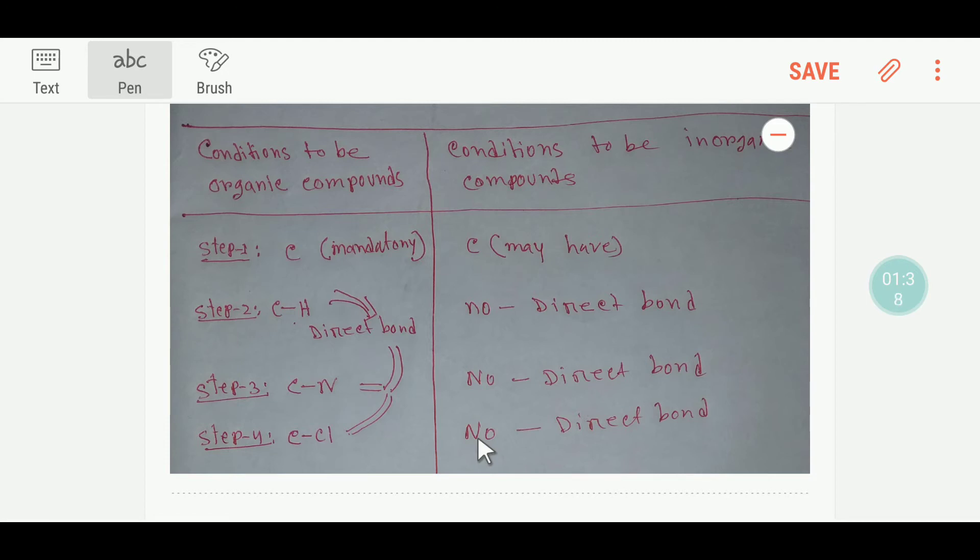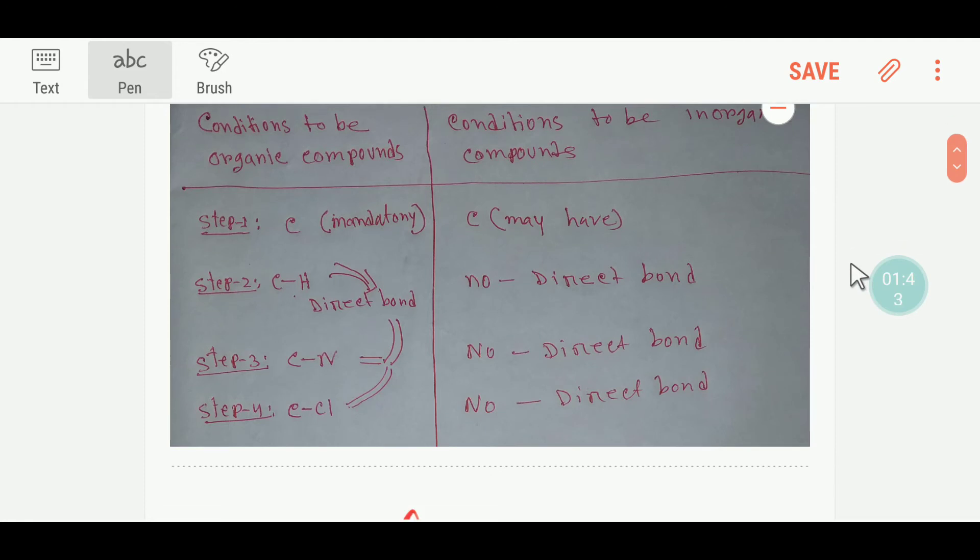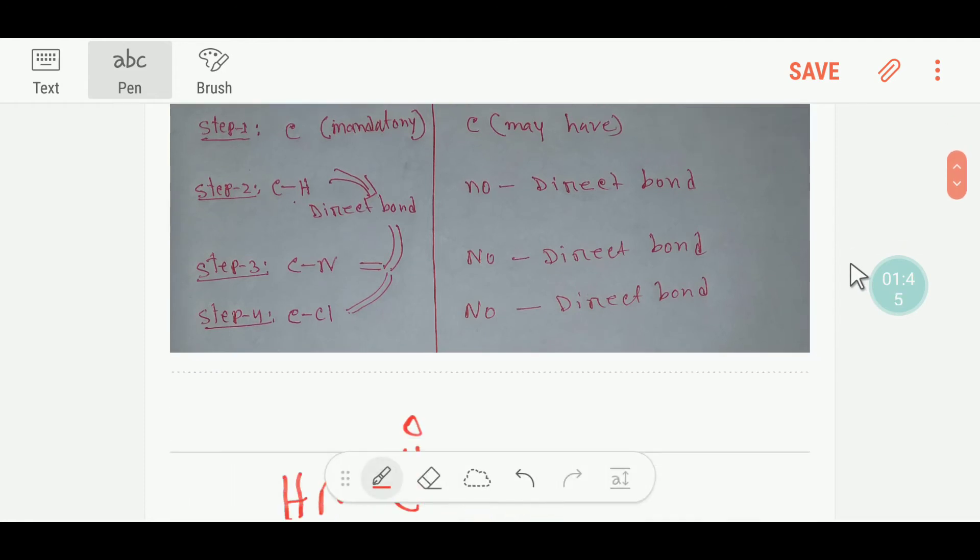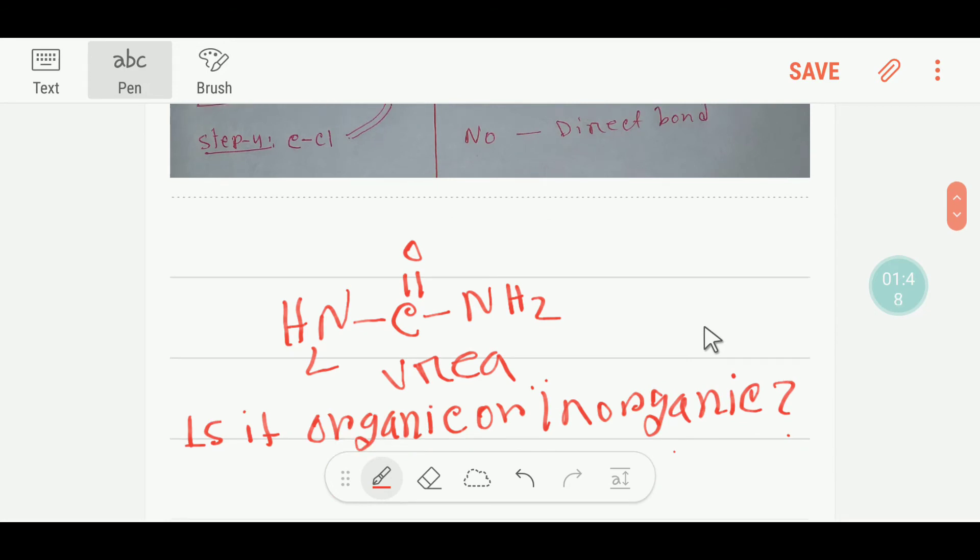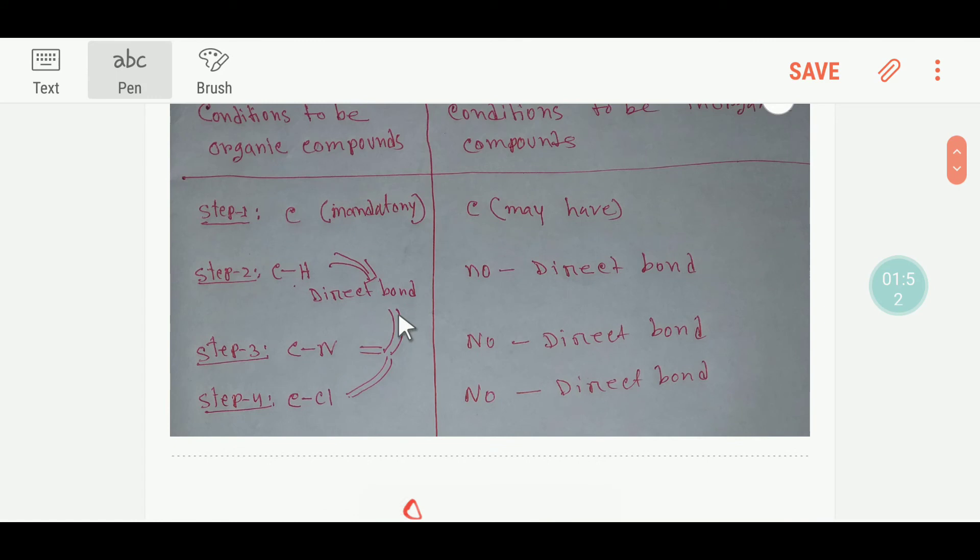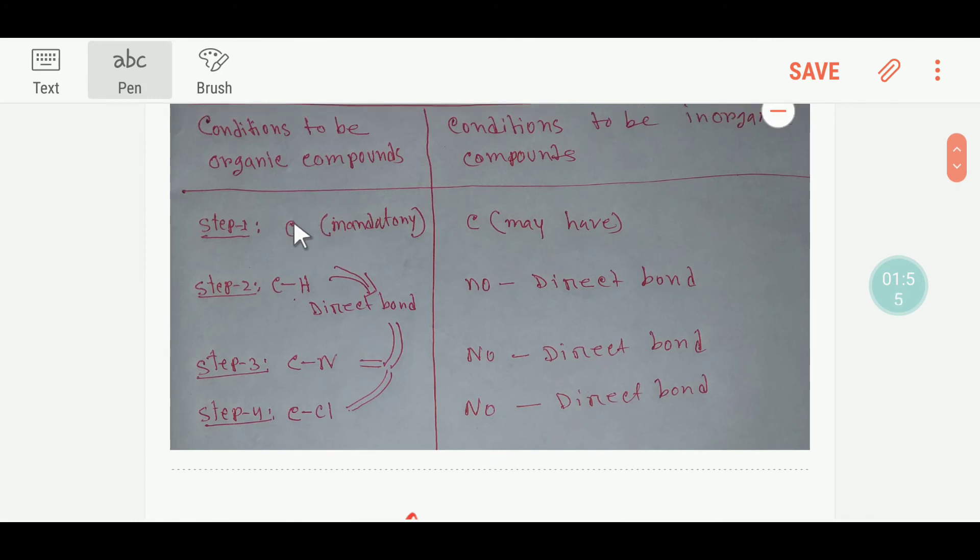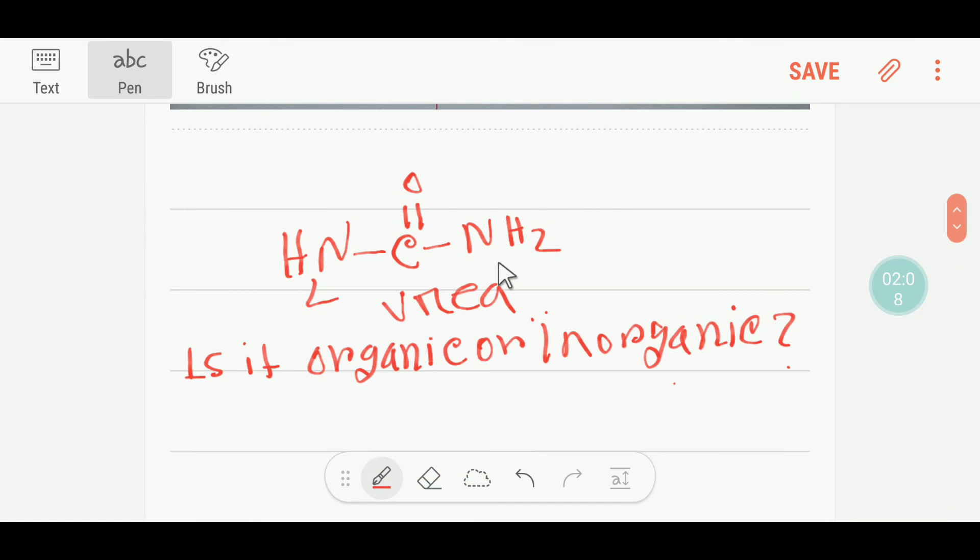However, in inorganic compounds, the carbon-hydrogen, carbon-nitrogen, and carbon-chlorine bonds will not be present. Let me examine this molecule with these rules. This compound urea has carbon, so it may be organic or inorganic at this point.